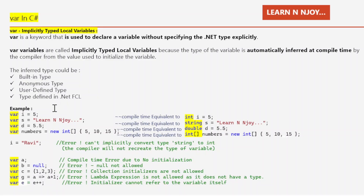Let's try to understand with the help of examples. Here I have written: var i = 5, var s = "learn enjoy", var d = 5.5, var numbers = new int[] {5, 10, 15}. Based on the value on the right-hand side of the equal operator, the data type is derived. So 5 belongs to the int category, so at compile time it converts to int i = 5. Similarly, "learn enjoy" belongs to string, so string s = "learn enjoy". Double d = 5.5, and int array numbers = new int[] {5, 10, 15}.